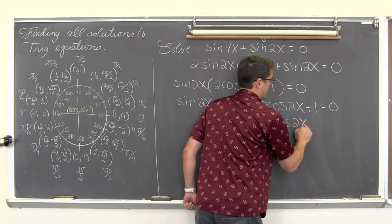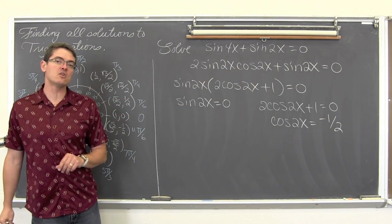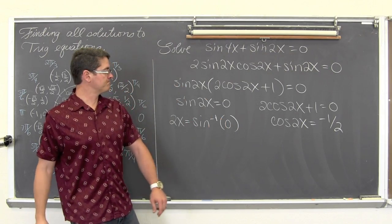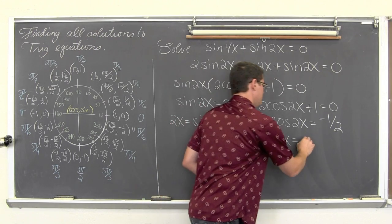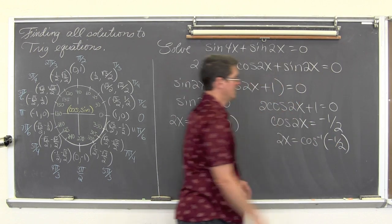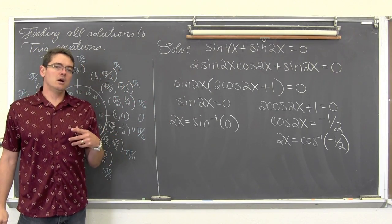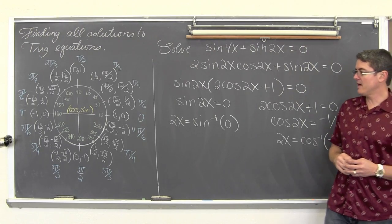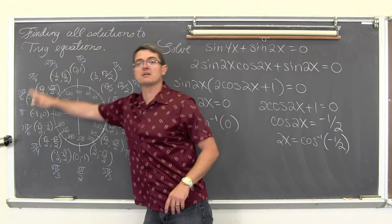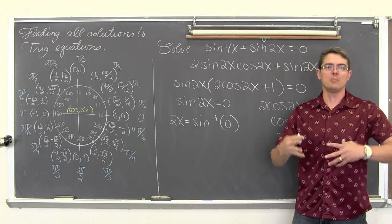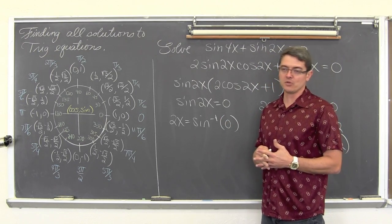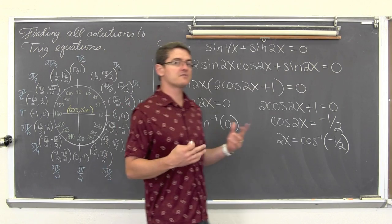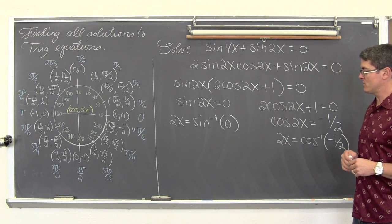So we get cosine of 2x equals negative 1 half. We are going to get those trig functions away from those angle measures by doing the inverse trig functions. So 2x is equal to the inverse sine of 0, and 2x is equal to the inverse cosine of negative 1 half. Now if we were only concerned about getting values of x between 0 and 2pi, I would need to go around the unit circle twice. But since we are looking for all of the solutions, not just ones within a restricted range, we are going to go around the unit circle once to find the angles we need, then add expressions at the end to show we want all possible solutions.